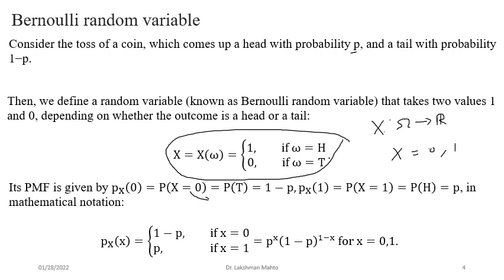When X takes value 0, the probability mass function p(0) equals P(X = 0). Looking at the pre-image of X = 0 in the sample space, it corresponds to tail, whose probability is 1 − p. So p(0) = 1 − p. Similarly, p(1) = P(X = 1), which corresponds to head, so p(1) = p — the probability of success.